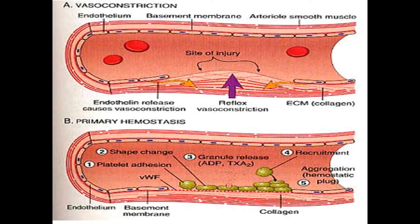Dense granules contain ADP, serotonin, histamine, and calcium. ADP is important as it works as a glue to help the platelets stick more to each other. Calcium will play a role in the intrinsic and extrinsic pathways, which we will cover in another video.